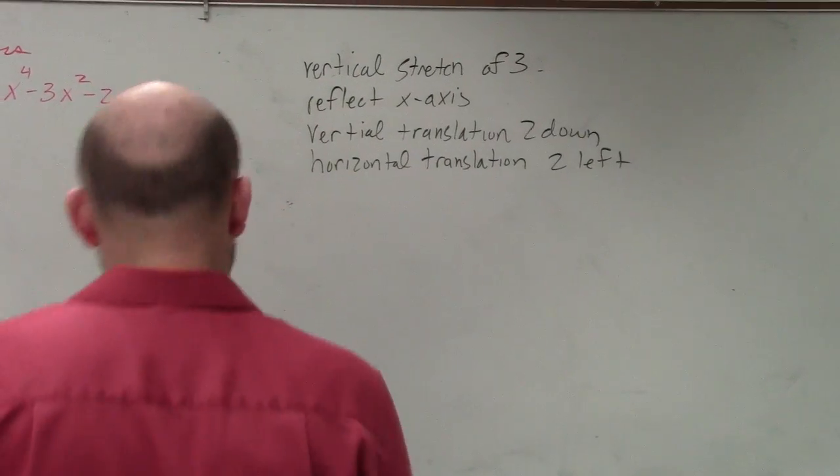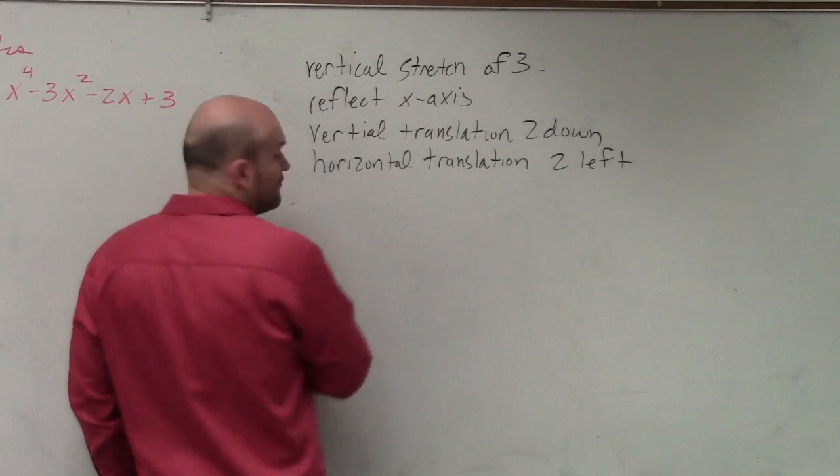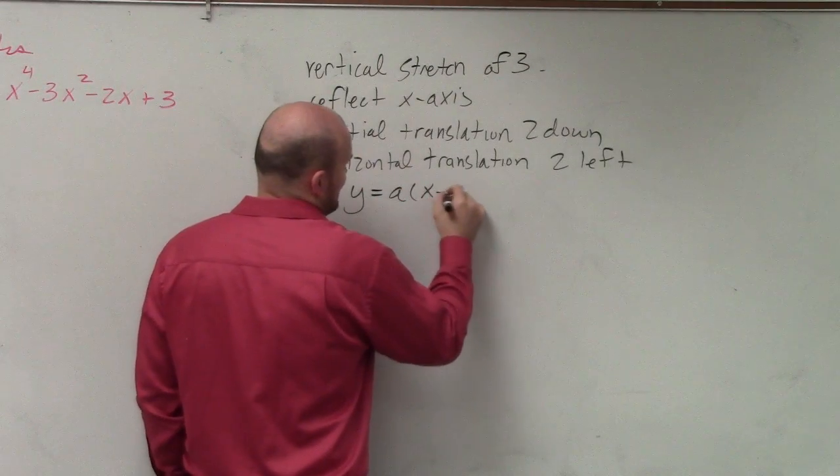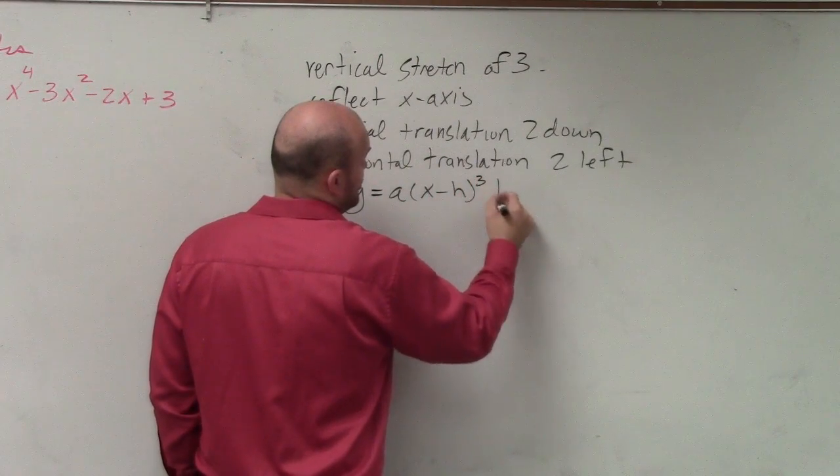And when you do that, what we need to understand is here is your formula for your cubic: y equals a times x minus h cubed plus k.